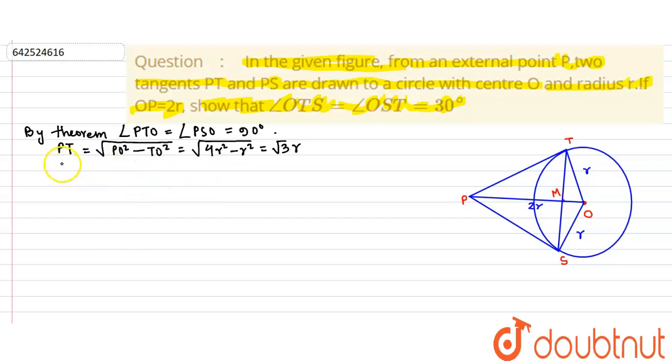Now similarly, PS can be evaluated in a similar fashion. That would be PO square minus OS square, which is again root over 4r square minus r square, which is root 3r. Now we have found PT and PS.